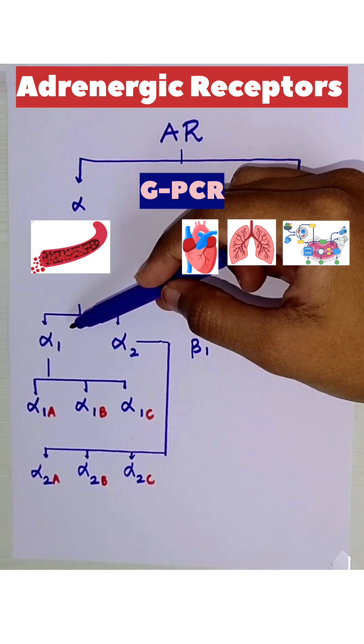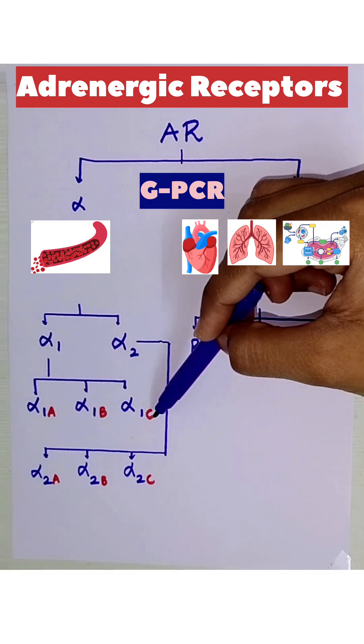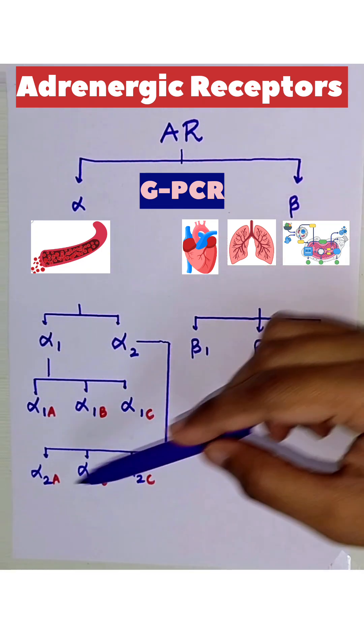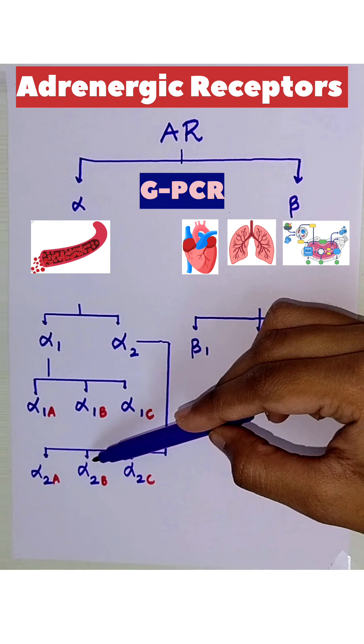Alpha1 is further divided into alpha1A, B, and C, and alpha2 into alpha2A, B, and C.